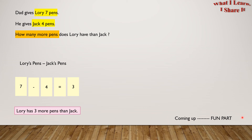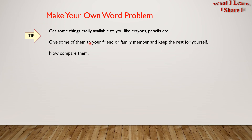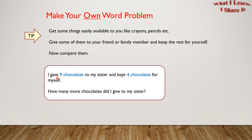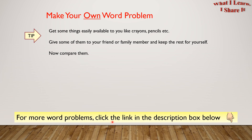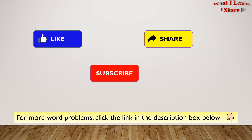Coming up is the fun part — make your own word problem! Here's a tip: get some things easily available to you, like crayons, pencils, etc. Give some of them to your friend or family member and keep the rest for yourself. Now compare them. Here's mine: I give 9 chocolates to my sister and kept 4 chocolates for myself. How many more chocolates did I give to my sister? See, it's so easy to make your own word problems! For more word problems, click the link in the description box below. Hope you liked my videos!